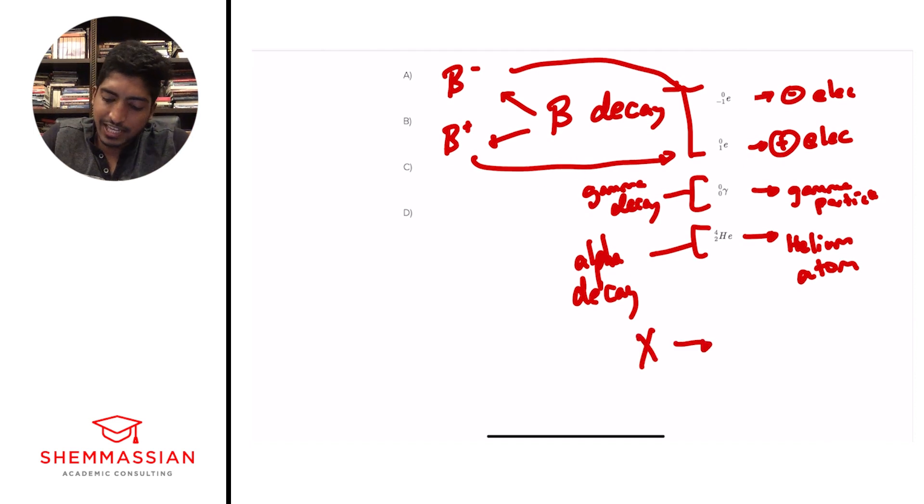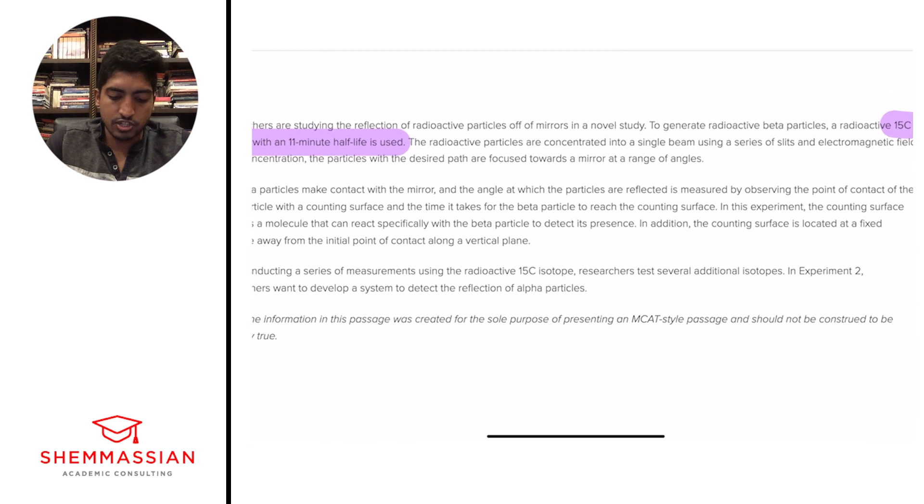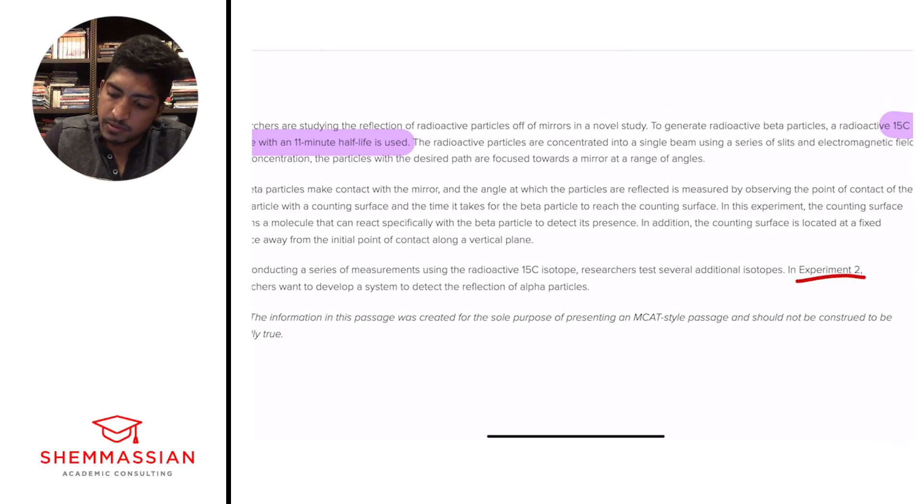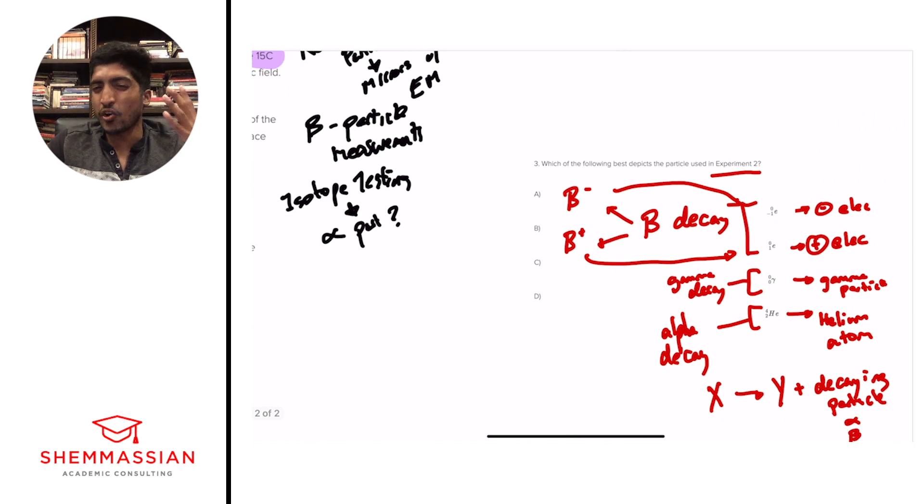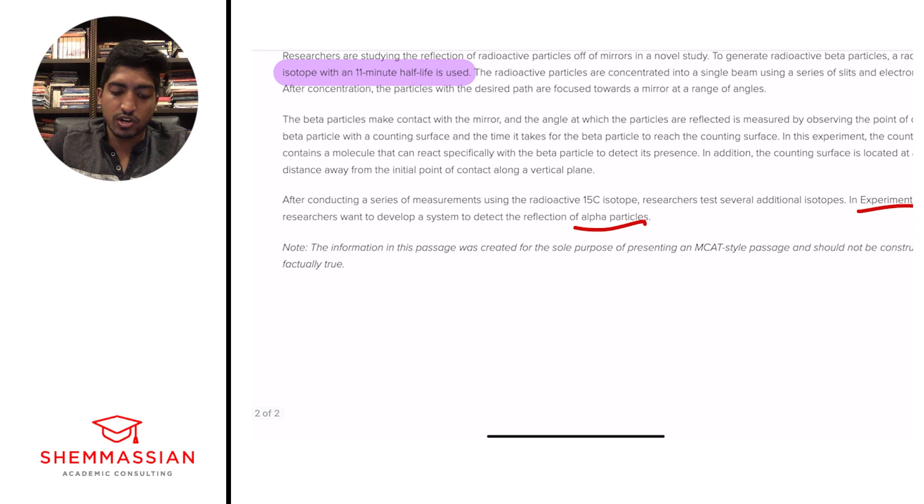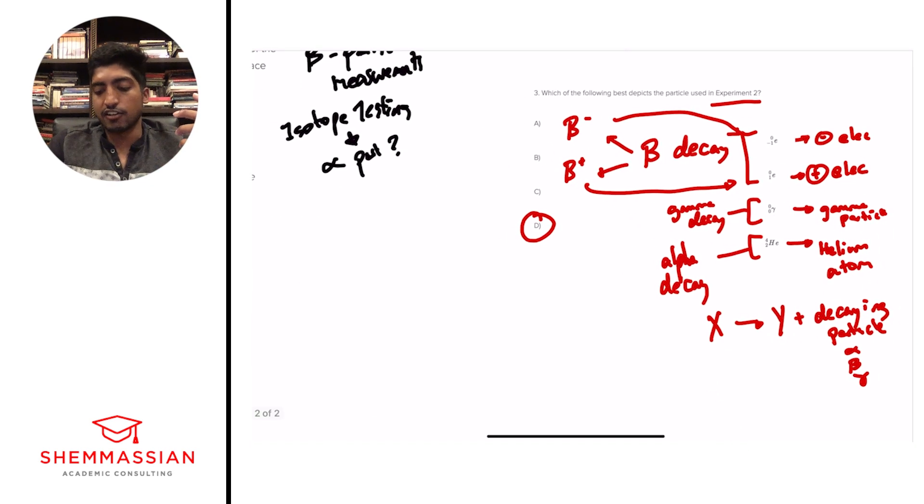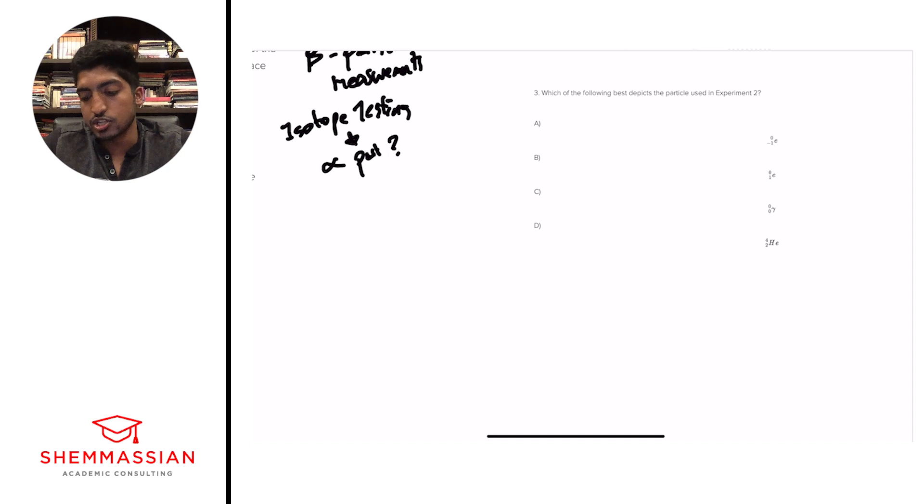And so having this foundational understanding is very important. What's happening in any decay is we start with x, we end with y, plus this decaying molecule or particle. And that can be alpha, beta, gamma, whatever. And so with that, now we look at experiment two. It's talking about experiment two. So let's go over here and look at experiment two. Experiment two is talking about alpha particles. It's talking about the reflection of alpha particles. So we need to be able to say, okay, alpha particles, only one answer choice makes sense. And that is D. We're saying in experiment two, researchers want to develop a system to detect the reflection of alpha particles. And alpha particles are helium molecules. Awesome. Now we've crushed three out of three. We're on to our final question.